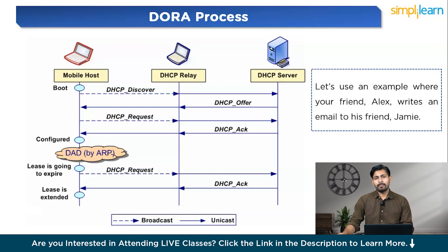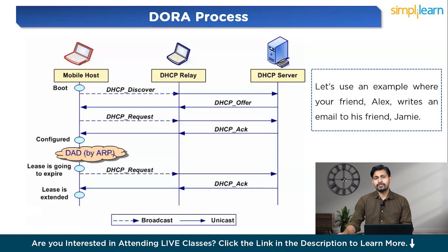Upon receiving the DHCP Discover message, the DHCP server responds with a DHCP Offer message containing an IP address and configuration details — including IP address, subnet mask, gateway, and lease time — offered to the client. This offer is unicast back to the DHCP relay, which forwards it to the mobile host, ensuring direct communication. Next, the mobile host responds with a DHCP Request message, indicating it has accepted the offered IP address and requesting the server to formally assign it. The client is essentially saying 'I would like to use the IP address you have offered.' This request is broadcast by the mobile host and forwarded by the relay to the DHCP server.